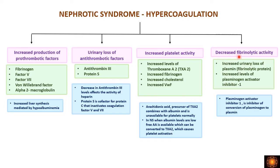There is also decreased fibrinolytic activity due to increased urinary loss of plasmin and increased levels of plasminogen activator inhibitor 1 (PAI-1), which the liver produces as a reflex mechanism. PAI-1 inhibits conversion of plasminogen to plasmin, reducing fibrinolytic activity. In summary, hypercoagulation results from increased prothrombotic factors, decreased antithrombotic factors, increased platelet activity, and decreased fibrinolytic activity.